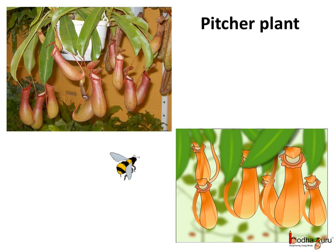On the other hand, the pitcher plant is green and can make its own food, but still it sets a trap in its leaf to catch insects. It has a pitcher-like structure with a lid at the end of the leaf. When an insect lands inside the pitcher, the lid gets closed and the insect gets digested inside.